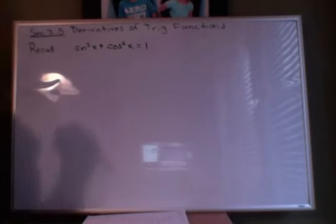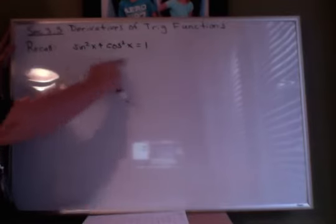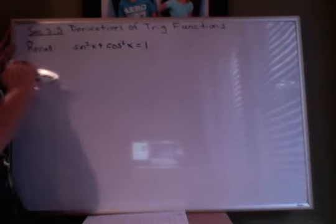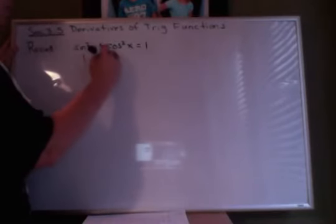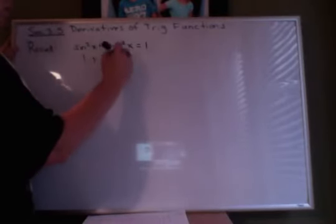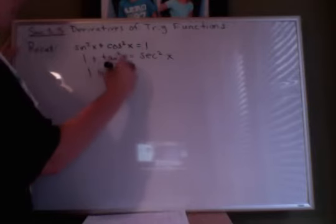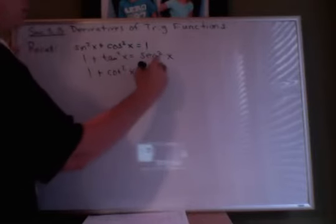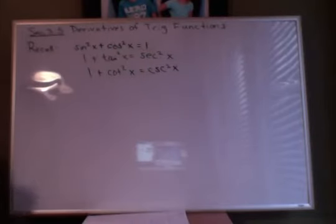Remembering that you can manipulate sine squared plus cosine squared equals 1 into other equations, like 1 minus sine squared equals cosine squared. Another one would be 1 plus tangent squared is equal to secant squared. And the last Pythagorean one: 1 plus cotangent squared is equal to cosecant squared. So those are all going to be very important.